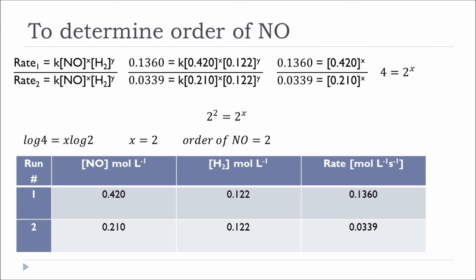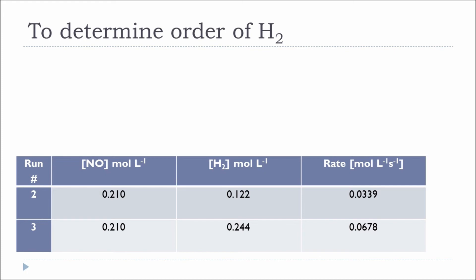Once the order of nitric oxide is determined, we look for two experiments where the concentration of NO remains the same but the concentration of hydrogen changes, to study the effect of H₂ on the rate. We pick runs 2 and 3. The NO concentration is 0.210 in both — so it won't affect the rate. The H₂ concentration changes from 0.122 in run 2 to 0.244 in run 3, doubling it. The rate changes from 0.0339 to 0.0678.